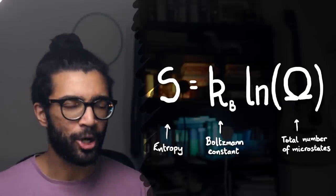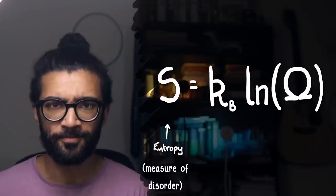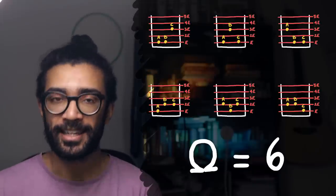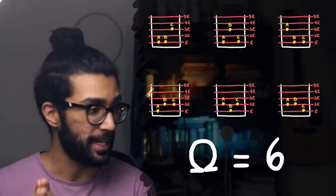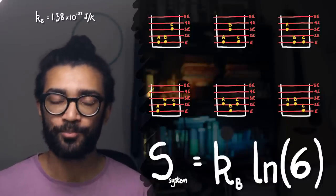And this is why the entropy of a system depends on how many microstates the system can occupy. Which brings us around to a rather common description of entropy. It's a measure of disorder. With this particular system, we've seen that there are six different ways to arrange it. So its entropy is equal to the Boltzmann constant multiplied by the natural logarithm of six.